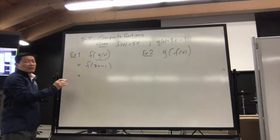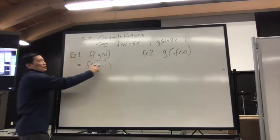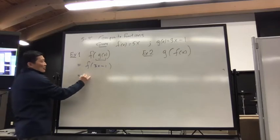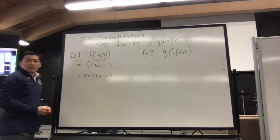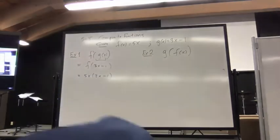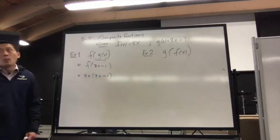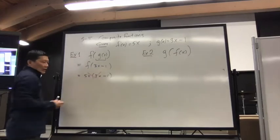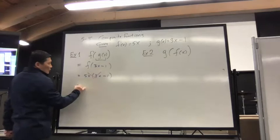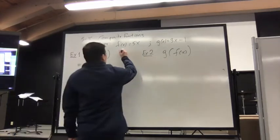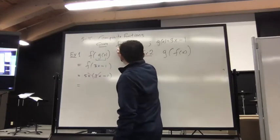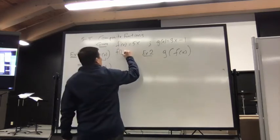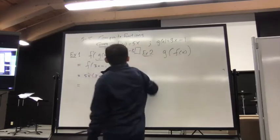Here is where some of you make a mistake. You look at F with parenthesis 3x minus 1, and then you look at F of X equals 5x, so you thought that perhaps it is 5x times 3x minus 1. That's actually not correct. We're talking about composite function — we're not talking about multiplying functions. Composite function is putting one function into another rather than multiplying. Make sure you don't do that. F of X equals 5x simply means F of something is equal to 5 times that something.